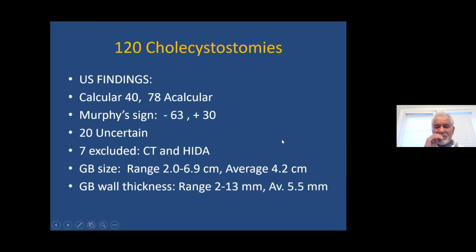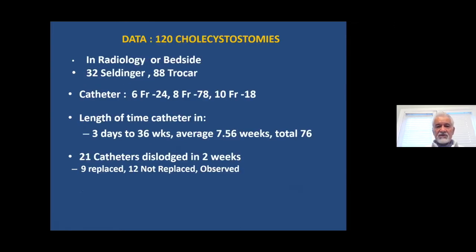The gallbladder was not always markedly distended — the average was about four centimeters, ranging from two to seven centimeters. The larger the gallbladder, the easier it is to place the catheter. The thickness of the gallbladder wall, which is normally about two millimeters, was as thick as 5.5 millimeters and up to 13 millimeters. The thicker the gallbladder wall, the more chance of sloughing and perforation unless it is fibrotic. Some procedures were done bedside and some in the radiology department.